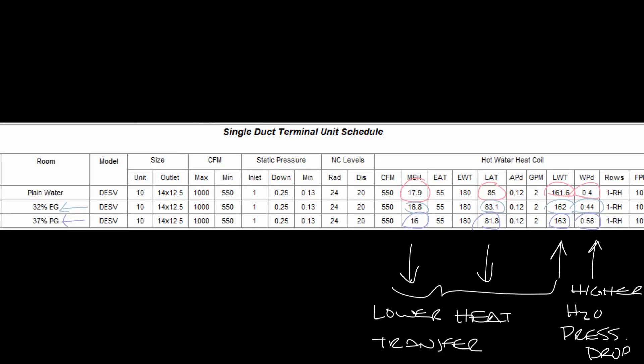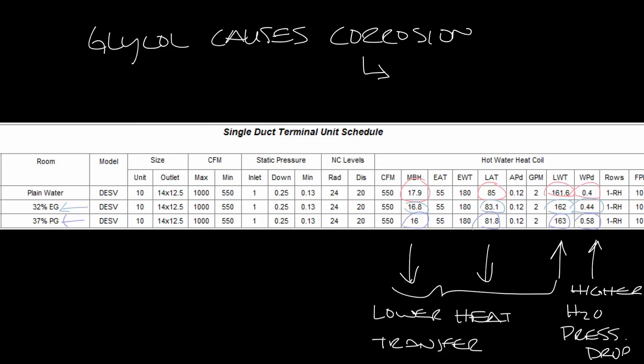If you needed to get the same heat output as plain water, you would have to make some sort of change in your system — go up to a bigger box, use a bigger coil, or if you went to about 3.3 GPM you could get up to about 86 degree leaving air temperature, but then your pressure drop goes up to about 1.07. Glycol can also cause corrosion in some materials, so you'll need to put a corrosion inhibitor in your water system if you're using glycol.